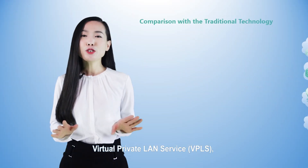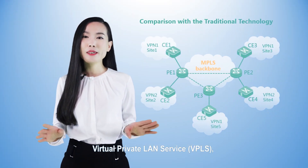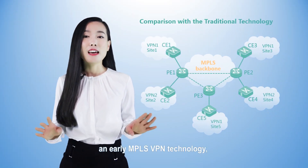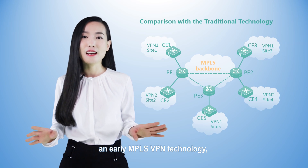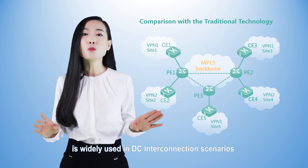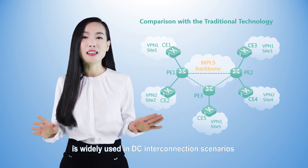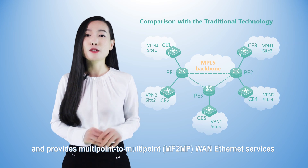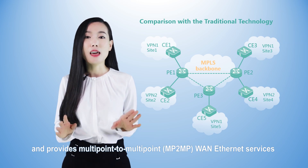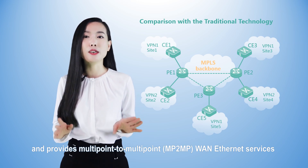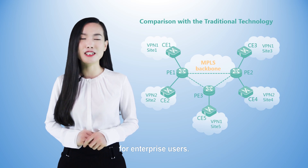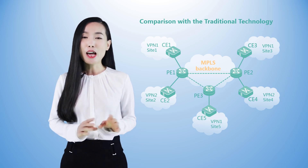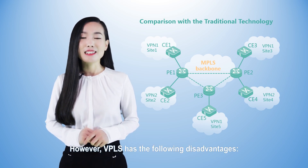Virtual Private LAN Service, VPLS, an early MPLS VPN technology, is widely used in DC interconnection scenarios and provides multipoint-to-multipoint MP2MP WAN Ethernet services for enterprise users. However, VPLS has the following disadvantages.